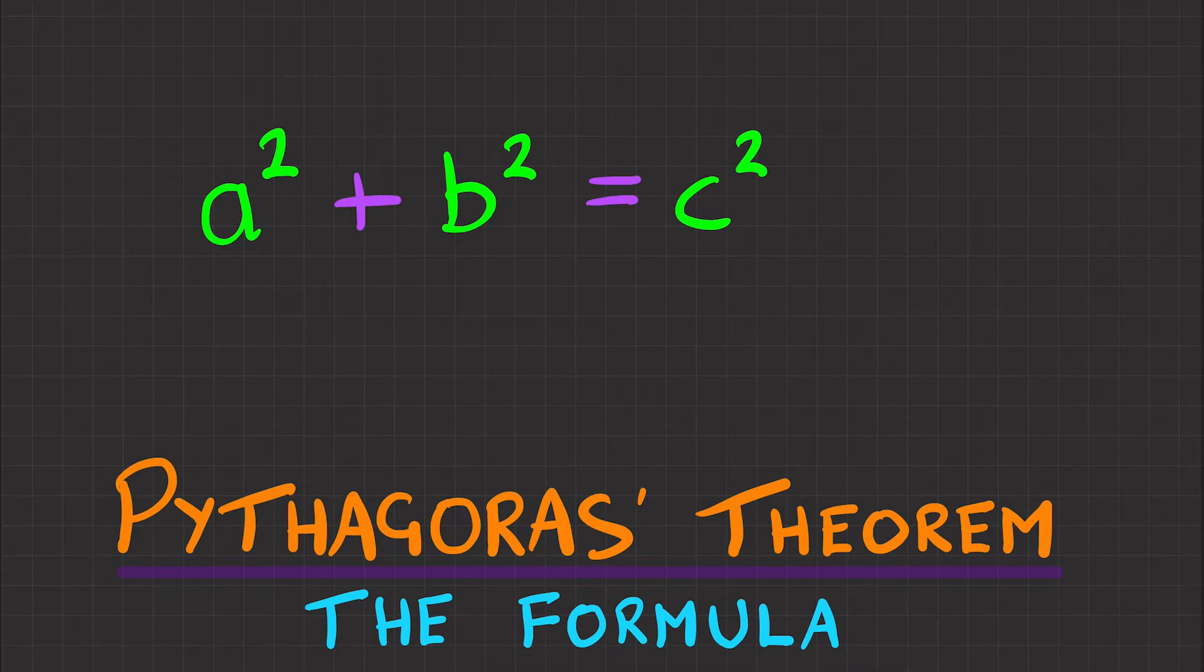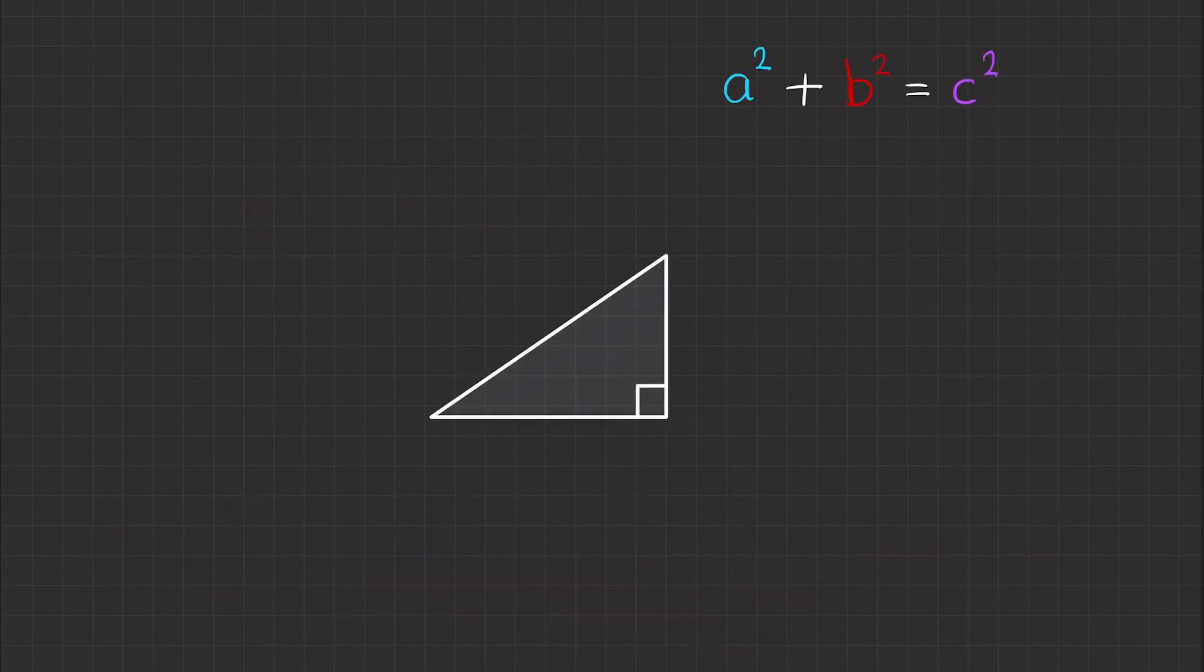But what does this mean? So we've got a right angle triangle here, and our values A, B, and C all represent a side length.